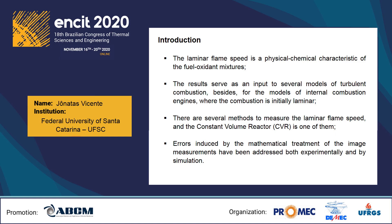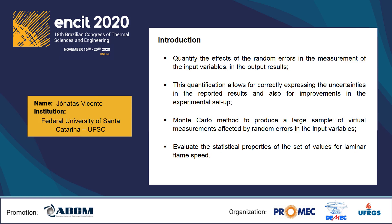Recently, the errors induced by the mathematical treatment of the image measurements have been addressed both experimentally and by simulation. For this reason, several guidelines have been suggested to treat these errors. However, there is still a need to quantify the effects of the random errors in the measurement of the input variables — such as temperature, pressure, and mass of fuel — on the output results, such as equivalence ratio and laminar flame speed. This quantification allows for correctly expressing the uncertainties in the reported results and also for improvements in the experimental setup.